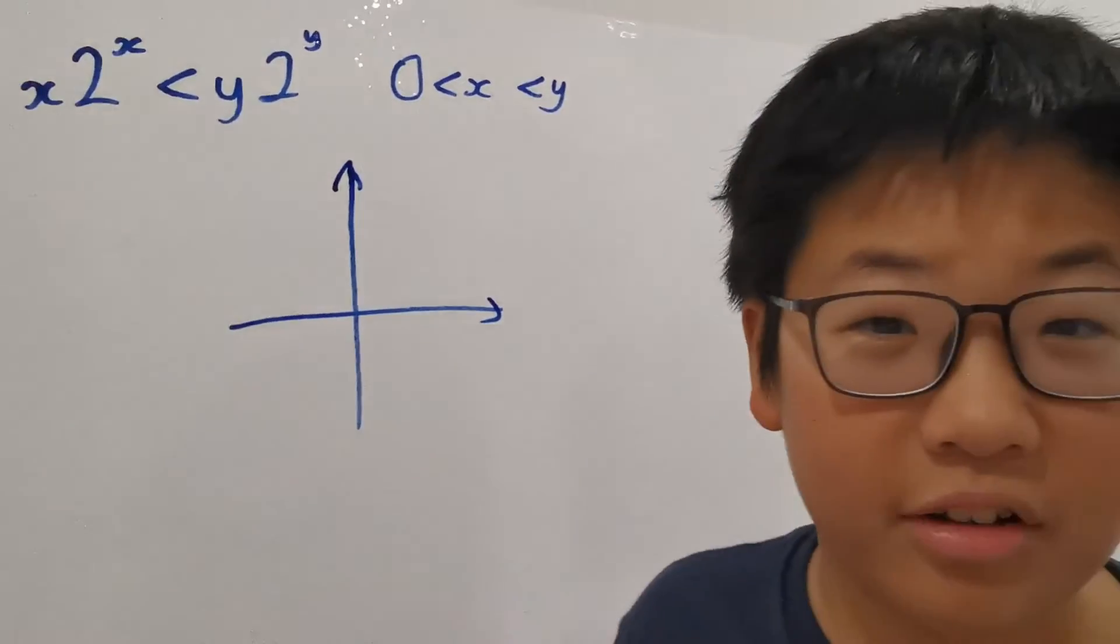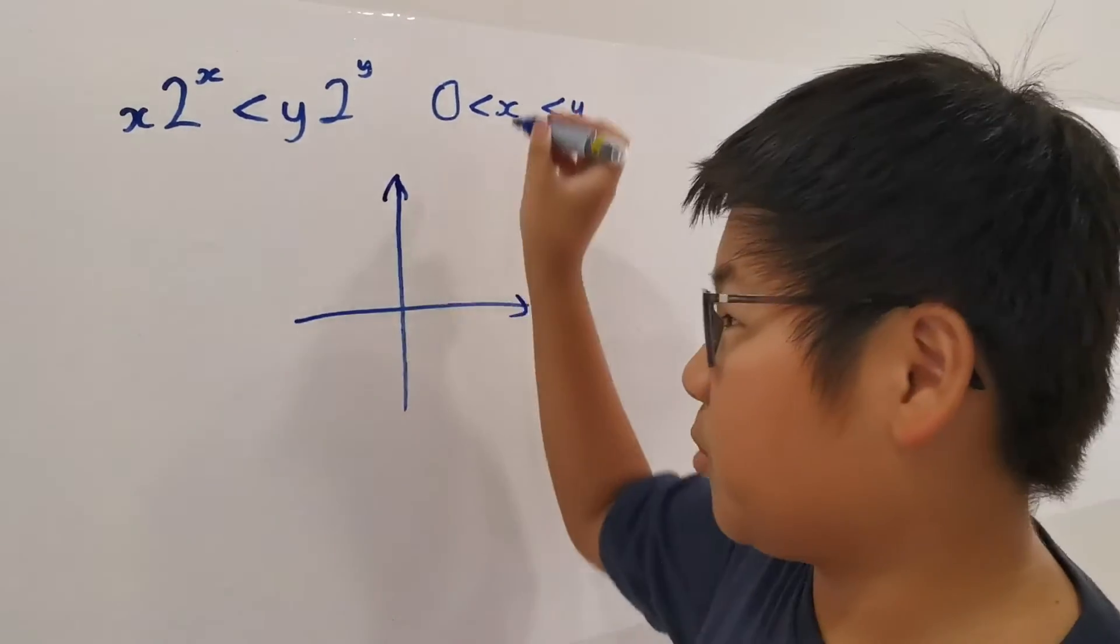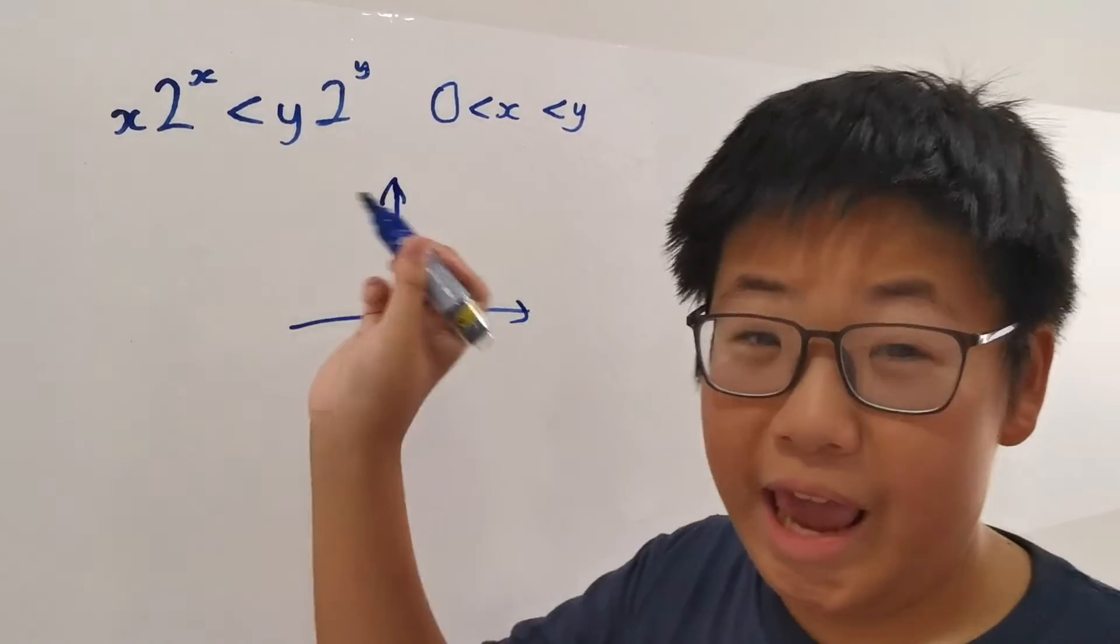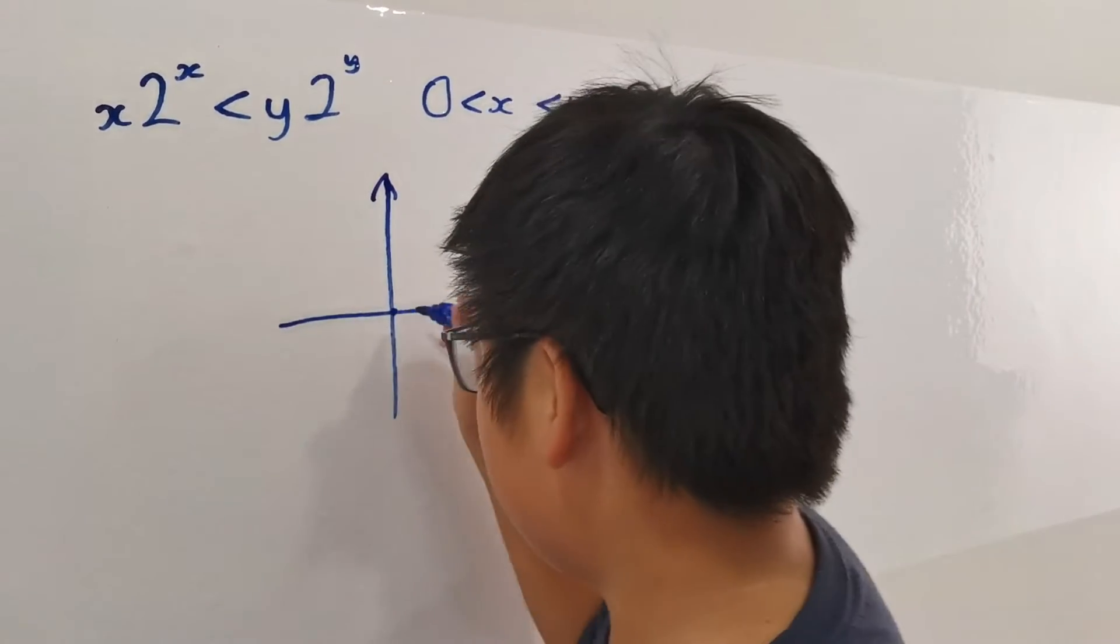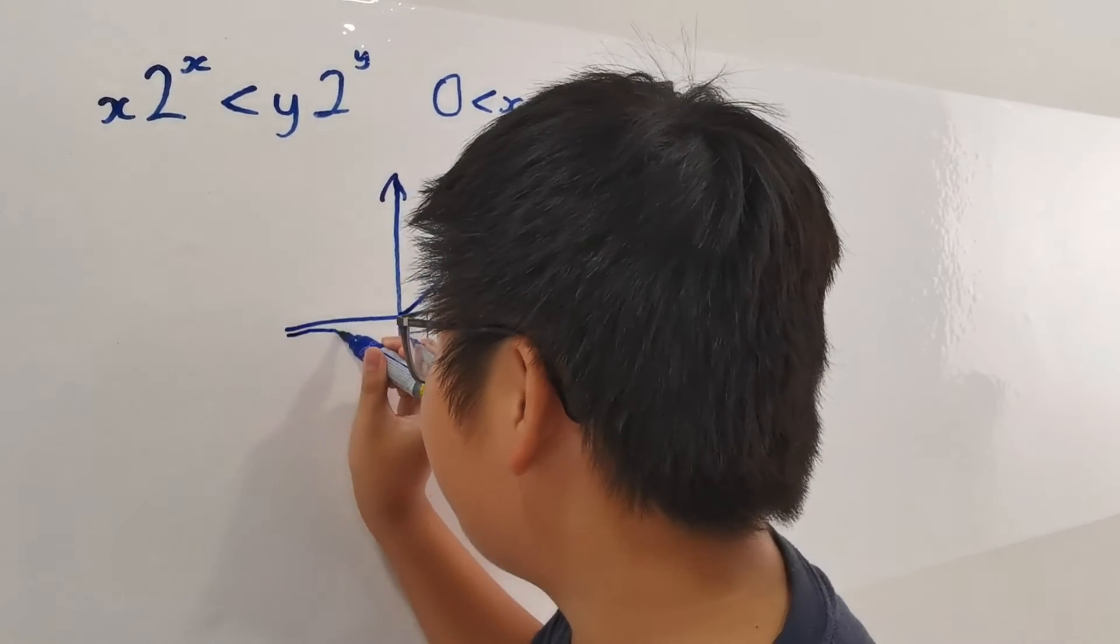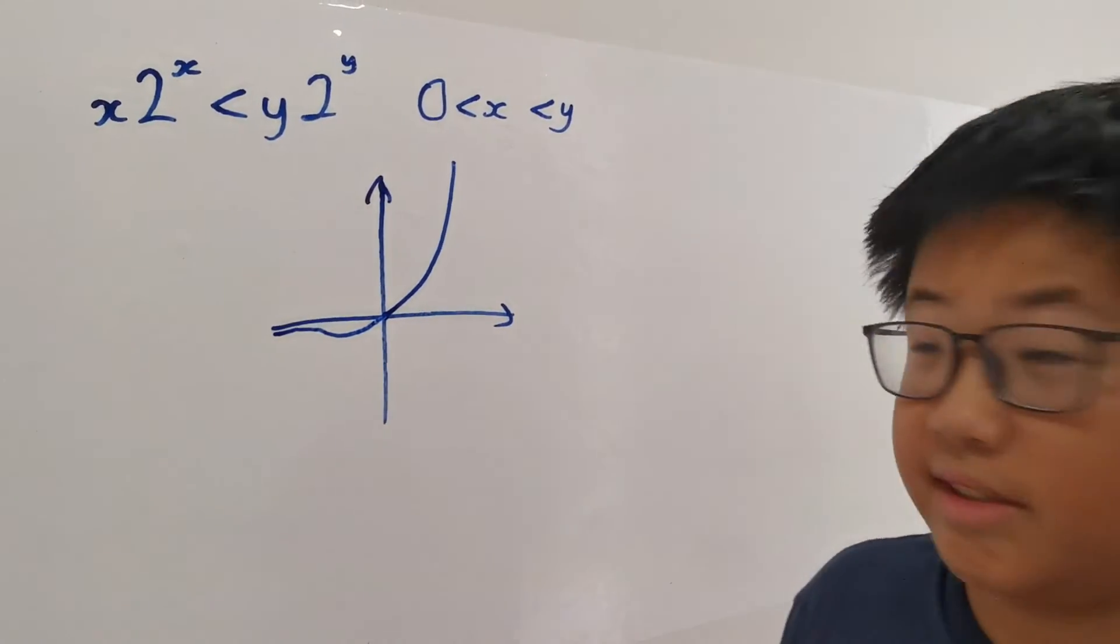As you might know, the graph of 2^x goes exponential like e to the power of x. But this time, we have an x at the end. It starts at the origin and goes way up. But it goes into a minimum in the negative space.